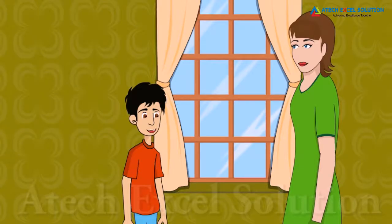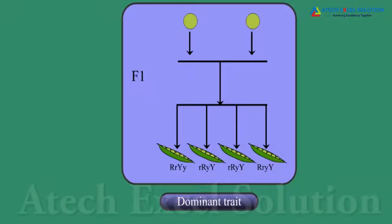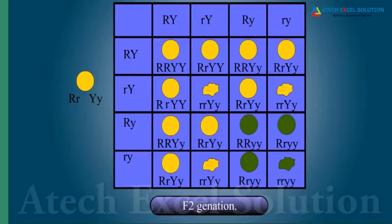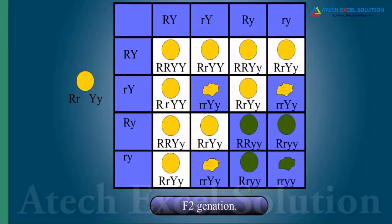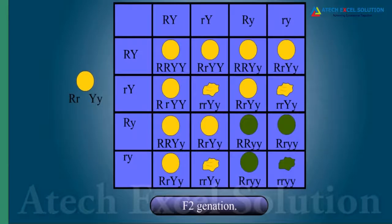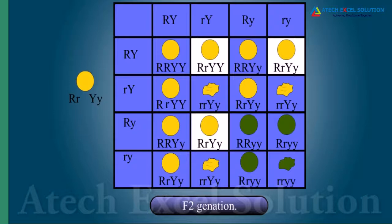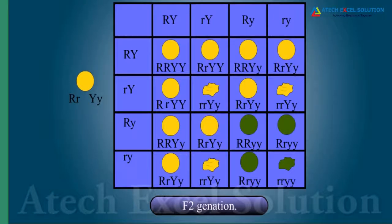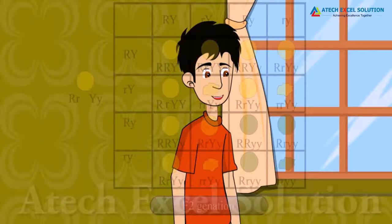What happens when pea plants of two different characteristics are hybridized? We will consider cross fertilization of round green seeds with wrinkled yellow seeds. Round and yellow seeds will be the dominant traits in F1 generation. When F1 generation is self-pollinated, in F2 progeny, some plants produced round and yellow seeds, some produced wrinkled green seeds, and some also showed new combinations of round green seeds and wrinkled yellow seeds. Hence, it can be concluded that these traits are independently inherited.